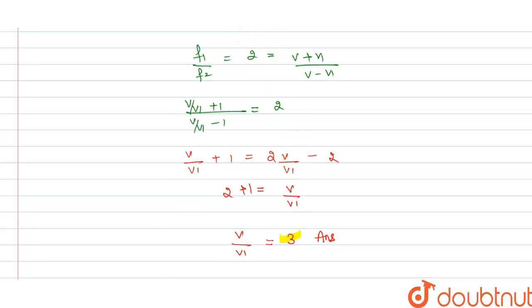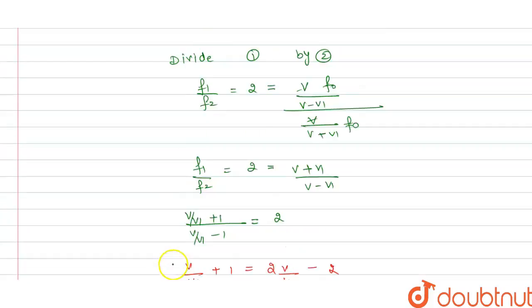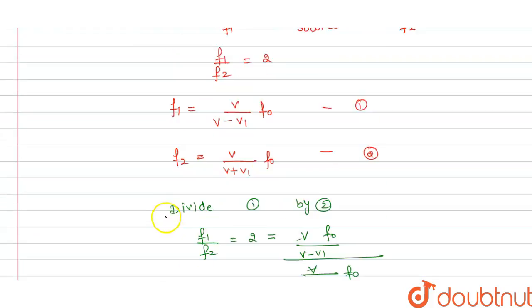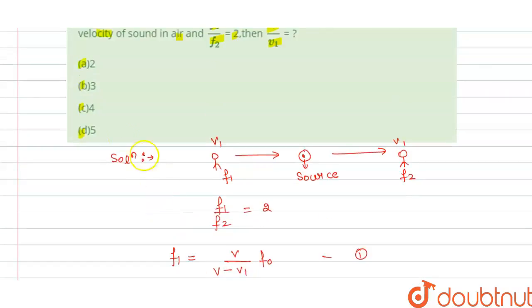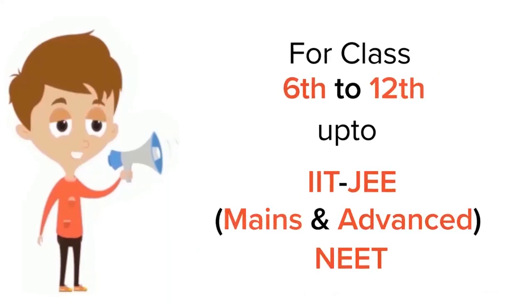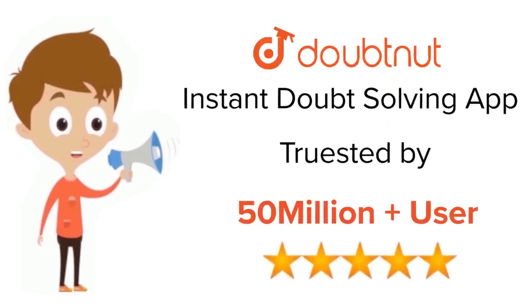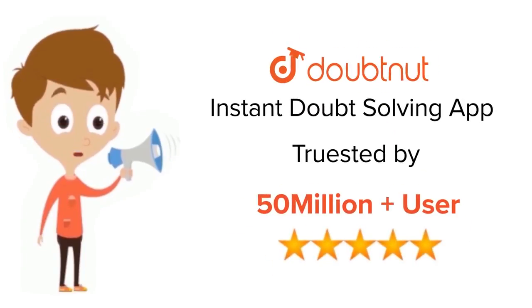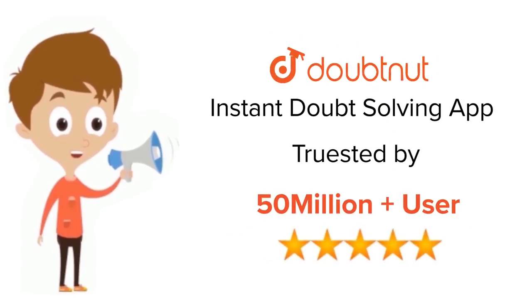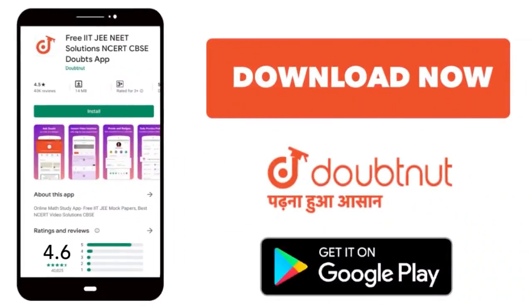We check which option is correct — option B is correct. Thank you. For class 6 to 12, IIT JEE and NEET level, trusted by more than 5 crore students. Download Doubtnut today.